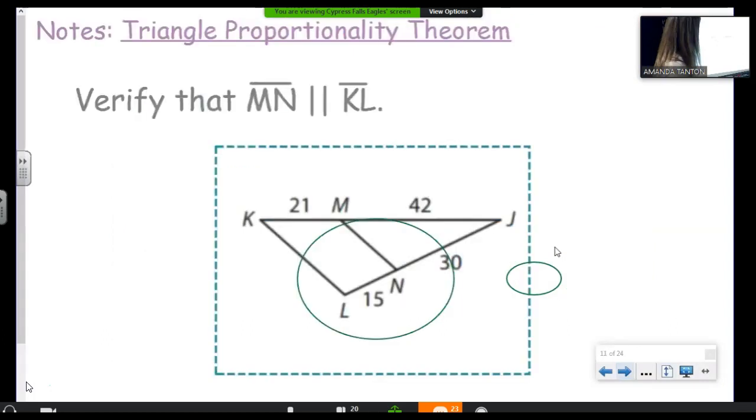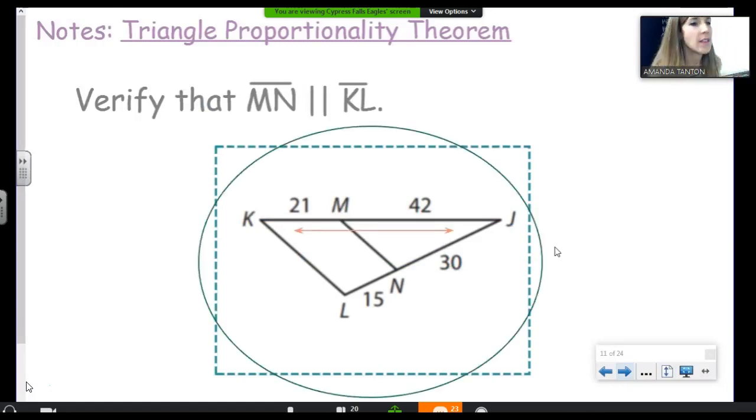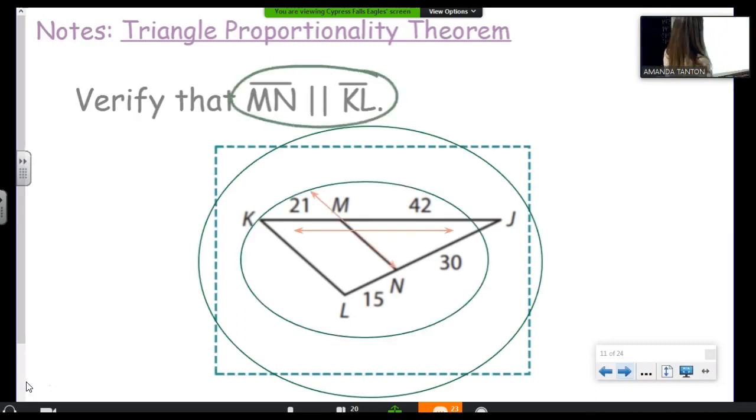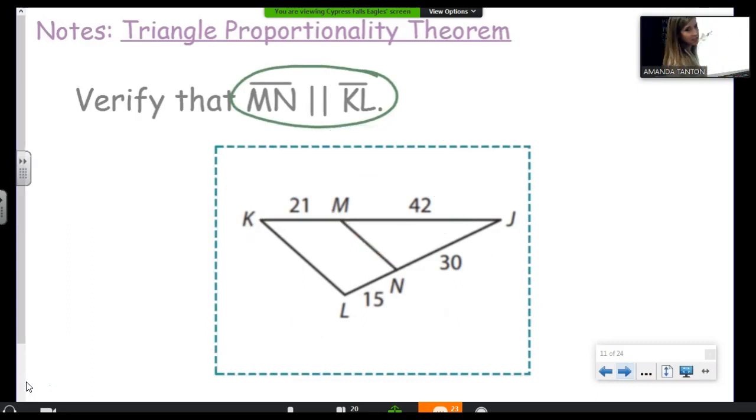So, we can use that in a problem like this. Verify, that means mathematically show that it's true, that MN is parallel to KL. So, what we would do is we would show, okay, enough with the annotations.